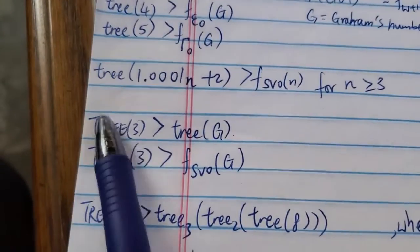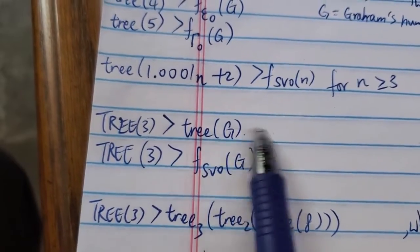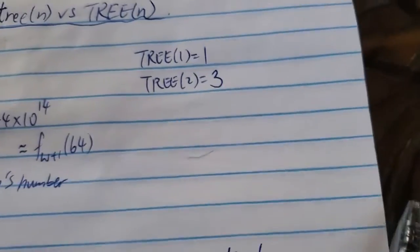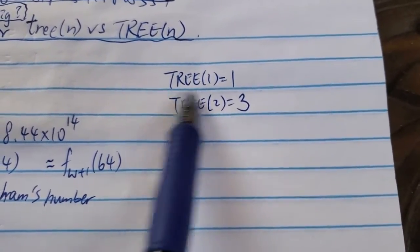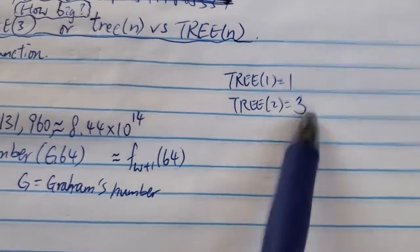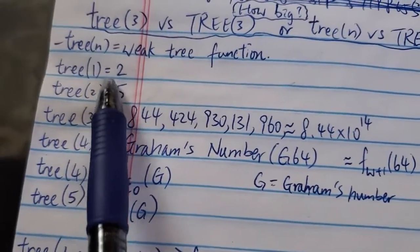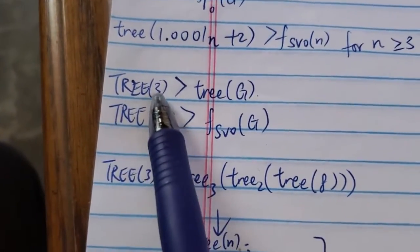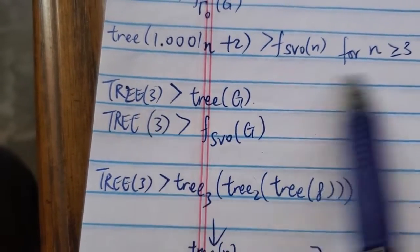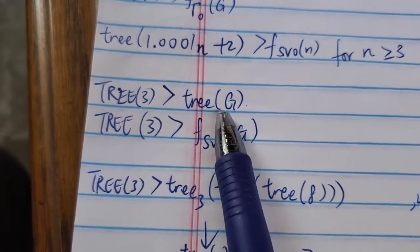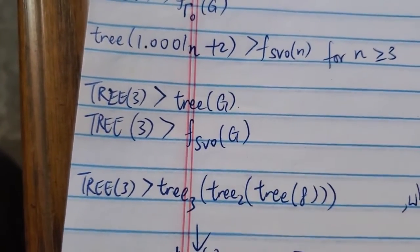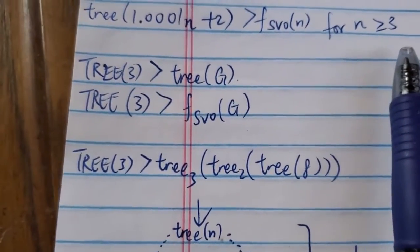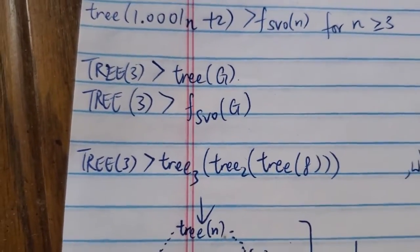Now, what about the regular 3-3 versus the weak 3-3? For small values, the regular 3-1 equals 1 and 3-2 equals 3, which are slightly smaller than the weak 3-1 and weak 3-2. However, when you get to 3-3, the regular 3-3 is much, much greater than the weak 3 of G, where G is Graham's number. So the regular 3-3 is greater than the weak 3 evaluated at Graham's number — which is quite mind-blowing.